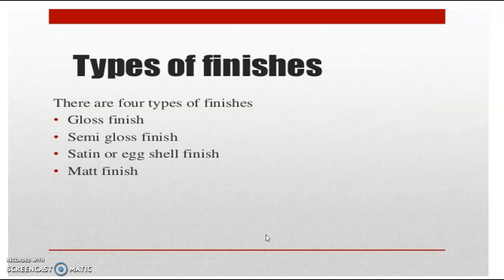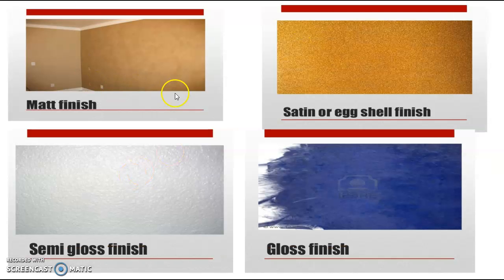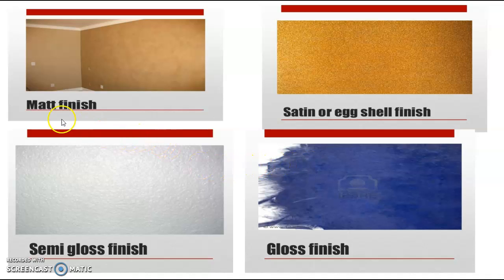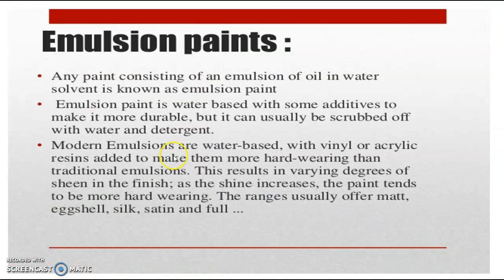And then we have types of finishing. There are four types: gloss finishing, semi-gloss finishing, satin or eggshell finishing, and matte finishing. You can see the images and compare them to observe what each actually looks like. This is matte finishing, this is satin or eggshell finishing, this is semi-gloss finishing, and this is glossy finishing.